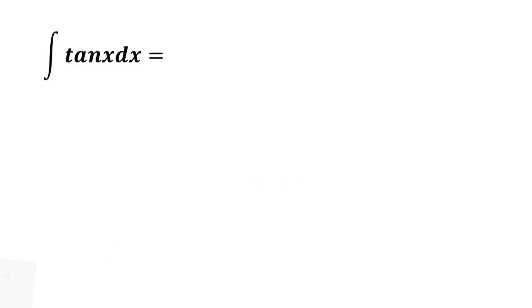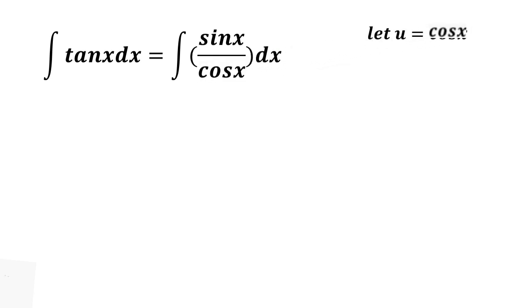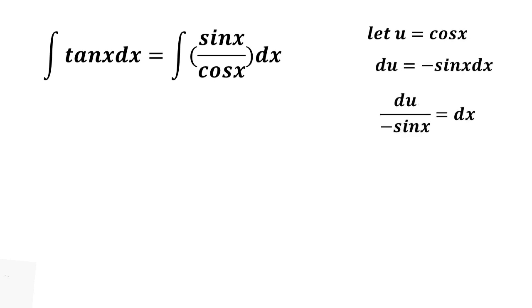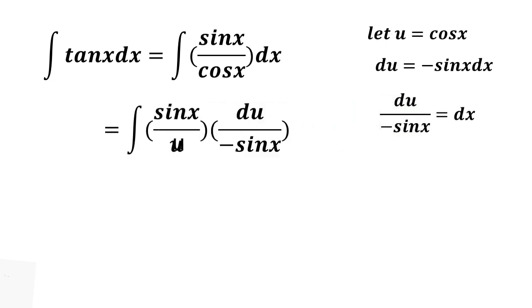To find the integral of tangent x dx, we are going to use the identity tangent x is equal to sine x over cosine x dx. Let u equal cosine x, so du is equal to negative sine x dx, meaning du over negative sine x is equal to dx. Substituting u for cosine x and du over negative sine x for dx, we have the integral of sine x over u times du over negative sine x. Cancel sine x and move the negative sign before the integral, so we have negative the integral of 1 over u du.